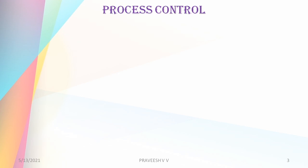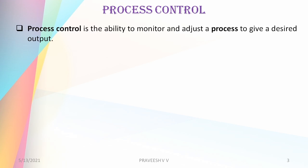Coming to our main topic — process control. I will briefly give a basic overview and then define the terms. Simply defined, process control is the ability to monitor and adjust a process to give a desired output. We have to monitor some parameters and then adjust the process such that it produces the required output. So that is basically process control: monitor and adjust the parameters.